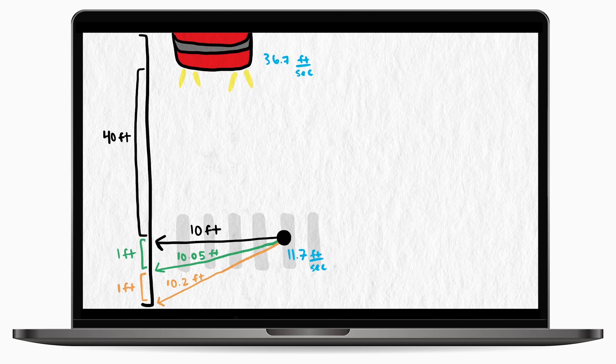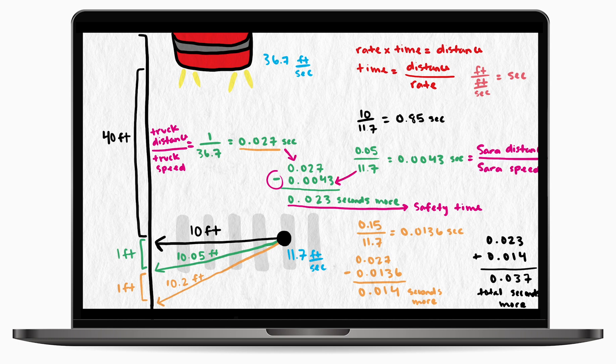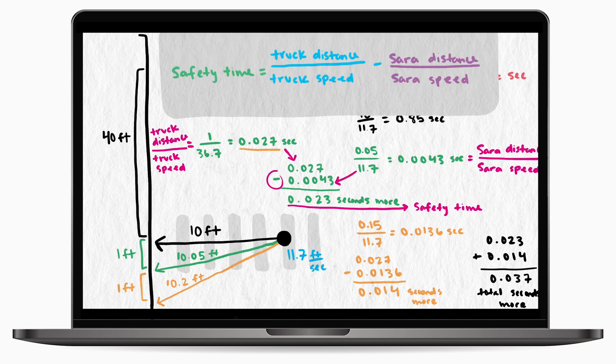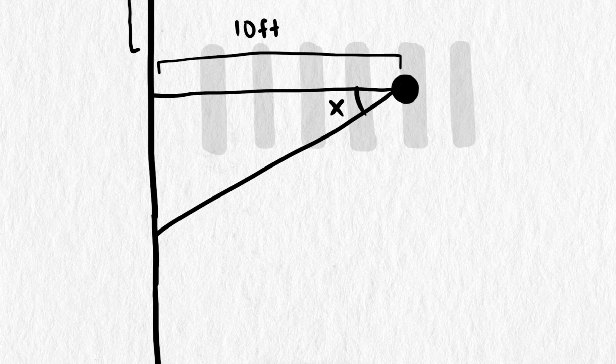To calculate the safety time in the last video, we used the equation rate times time equals distance and solved for time to get time as distance divided by rate. The safety time is the difference between the truck's time and Sarah's time. So the general form is truck's distance divided by truck's speed minus Sarah's distance divided by Sarah's speed. In this video, we'll calculate the distances from the initial angle x using trig functions.